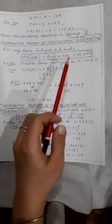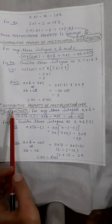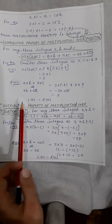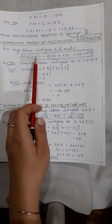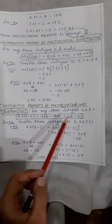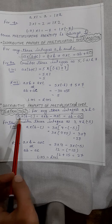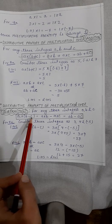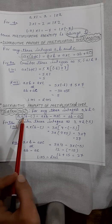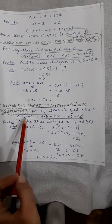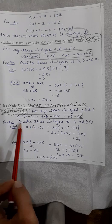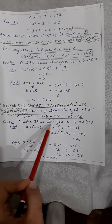That is the distributive property of multiplication over addition. Now next is the distributive property of multiplication over subtraction. You have to check for subtraction, so instead of a positive sign, you apply a negative sign. The process remains the same: a multiplied with (b minus c) equals a into b minus a into c. Let's prove that by taking one example.